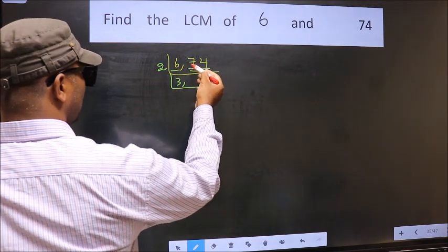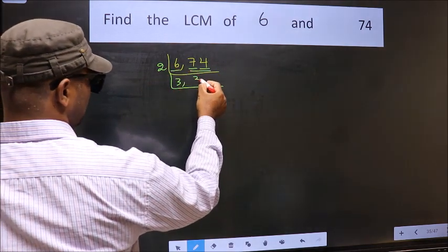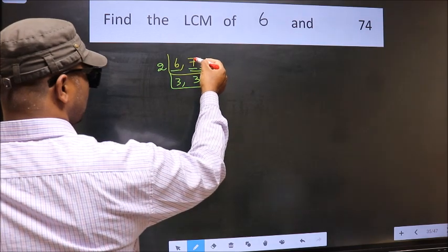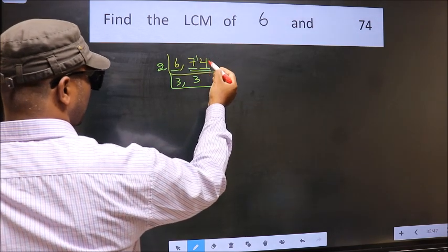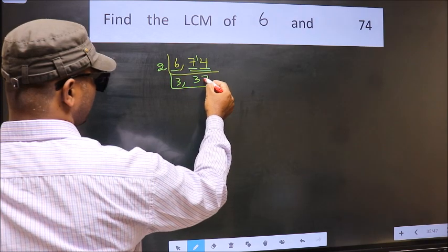First number 7. A number close to 7 in 2 table is 2 times 3 is 6. 7 minus 6 is 1, 1 carried forward 14. When do we get 14 in 2 table? 2 times 7 is 14.